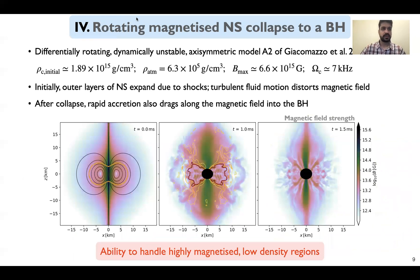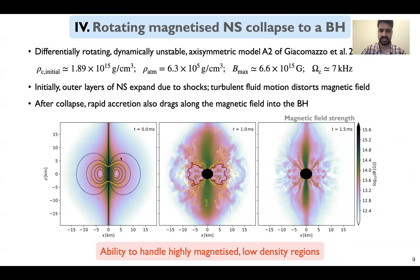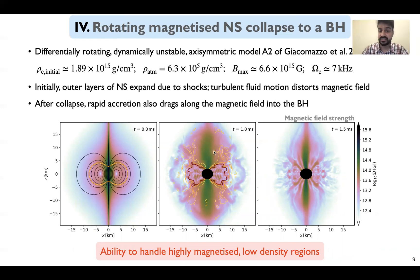For the next test, we consider a differentially rotating dynamically unstable neutron star that eventually collapses to a curved black hole. This system is based on the A2 model of Giacomazzo et al. 2011. Here too, we paint this dipolar field into our initial neutron star configuration. Soon after the black hole formation, the matter starts to get rapidly accreted onto the black hole, and the magnetic field also gets dragged along by this infalling material. This critical test also shows that the Reprimand scheme can handle magnetized neutron star collapse to a black hole rather well, which is a typical scenario encountered in DNS mergers.